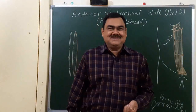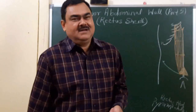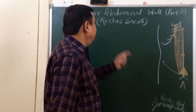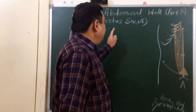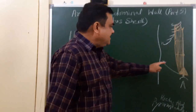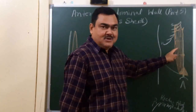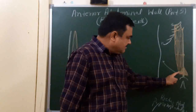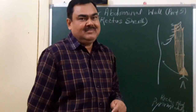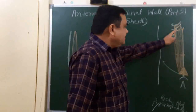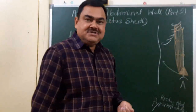Now we will discuss the very important topic, the rectus sheath. In this diagram you have seen the rectus abdominis muscle, and here is a small muscle called the pyramidalis muscle. This muscle is covered in a sheath.